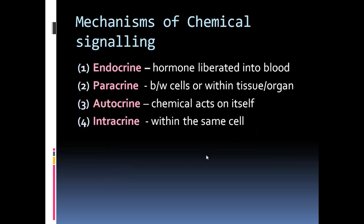The mechanisms of chemical signaling include the following: endocrine, paracrine, autocrine, and intracrine. Endocrine is a hormone that is liberated into the blood. Paracrine is between cells or within tissues and organs. Autocrine is where the chemical acts on itself, and intracrine is within the same cell.